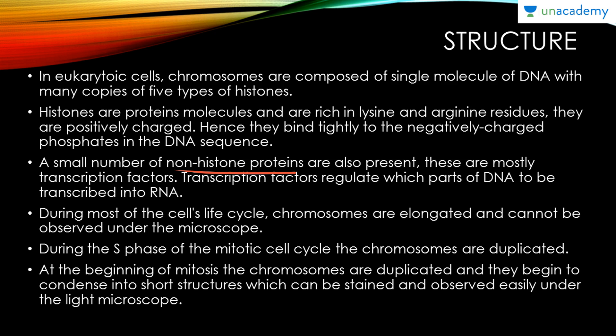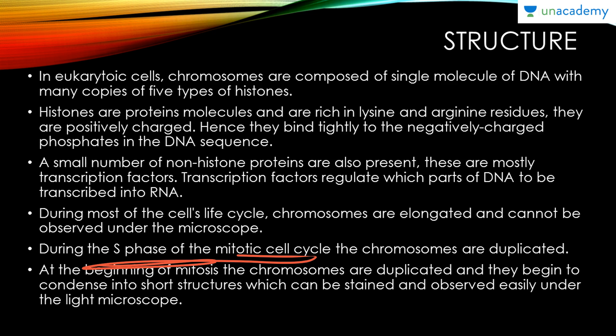During most of a cell's life cycle, chromosomes are elongated and cannot be observed under the microscope. During the S phase of the mitotic cell cycle, chromosomes are duplicated. At the beginning of mitosis, chromosomes condense into short structures that can be stained and observed easily — they are only visible once condensation begins.